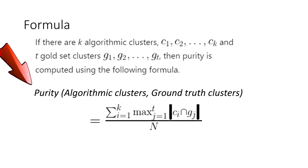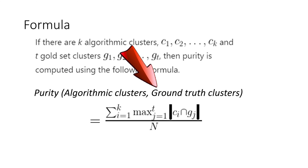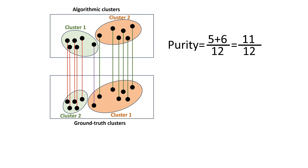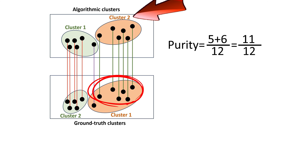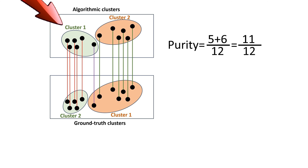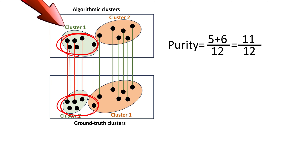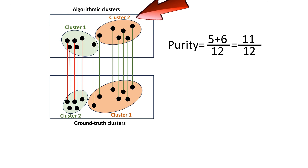The formula for purity measures how pure the algorithmic clusters are in terms of the gold standard clusters. If points in an algorithmic cluster come from multiple ground truth clusters, then it is less pure compared to a cluster whose points come entirely from exactly one ground truth cluster. In our earlier example, cluster 2 derived by the algorithm is pure because all its points are found in exactly one ground truth cluster. Cluster 1 is not 100% pure because its points come from two ground truth clusters — therefore cluster 2 is purer than cluster 1.